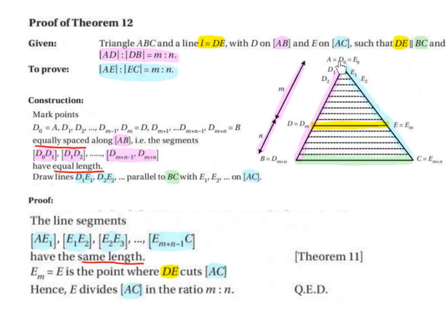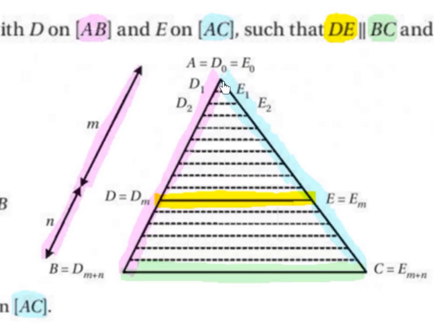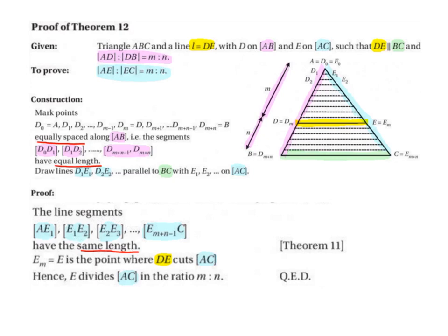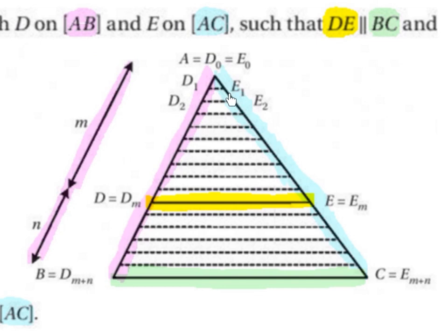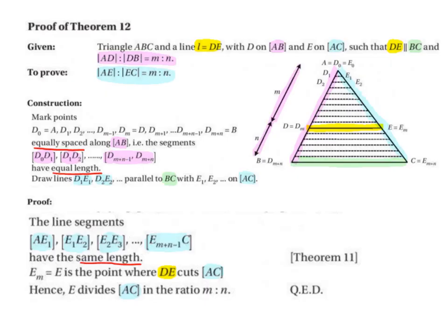That's the construction. Now this is the proof. The line segments A E1, E1 E2, E2 E3, and so on down as far as EM plus N minus 1 C, each of these line segments have the same length, they're the same distance apart.